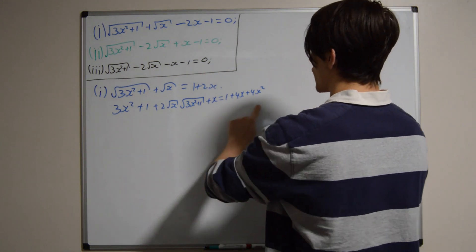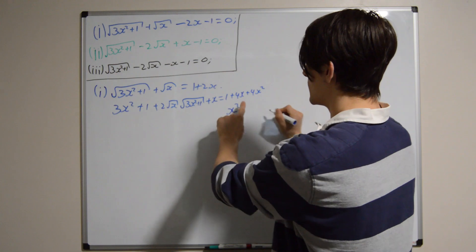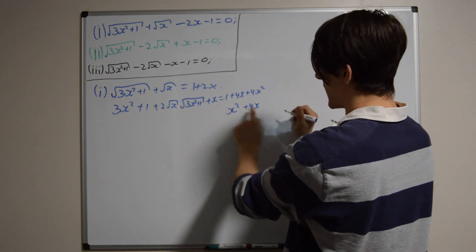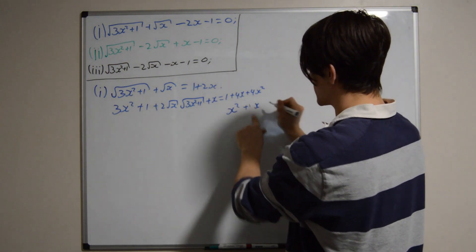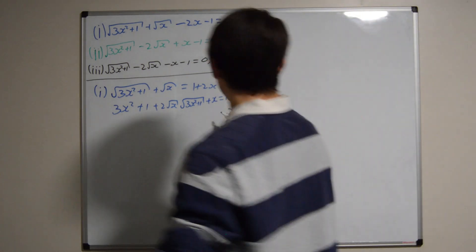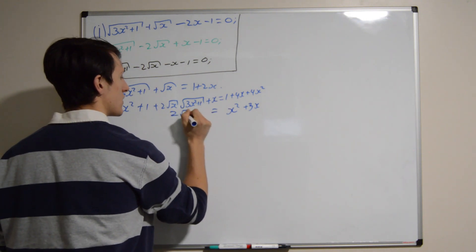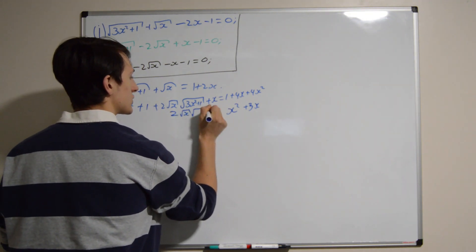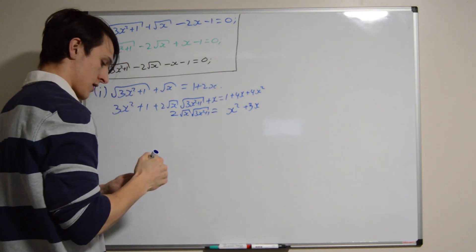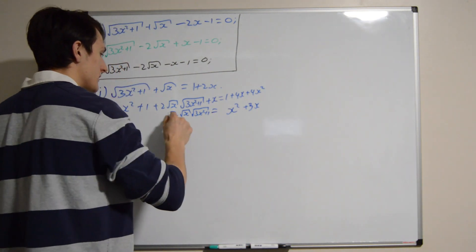So, 4x squared minus 3x squared is going to be x squared. There's only the 4x — it's 4x minus x, which is in fact 3x. The ones are going to cancel, and on the left hand side we're still left with 2 times the square root of x times the square root of 3x squared plus 1. Now I'm going to highlight that in red, and you'll see why later.